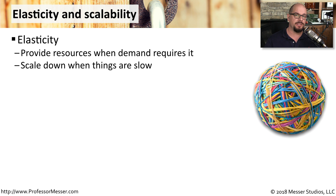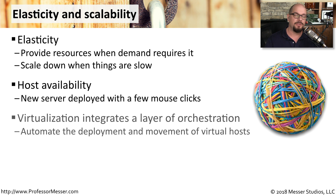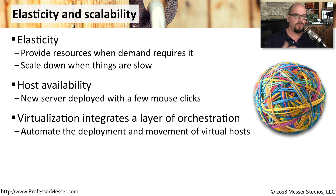One of the biggest advantages of a cloud-based infrastructure is the ability to change and move whenever conditions require it. Elasticity is where you add new resources as they're needed and scale things down as activity slows, so you're only using the resources required for a particular task when needed. Host availability allows you to implement this elasticity — you can click your mouse and build out a single server or an entire application platform, which requires a good bit of orchestration and automated processes.